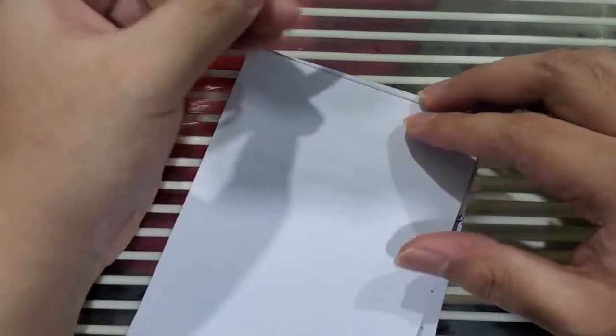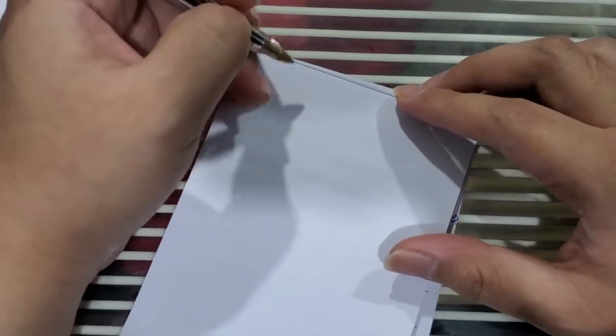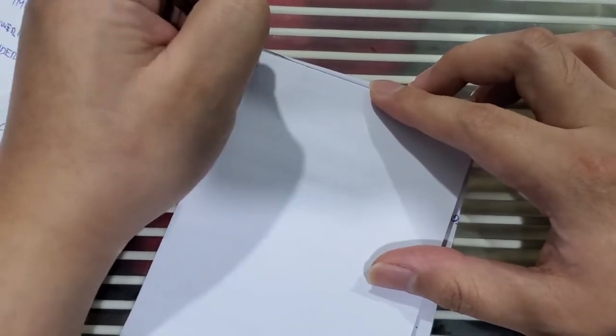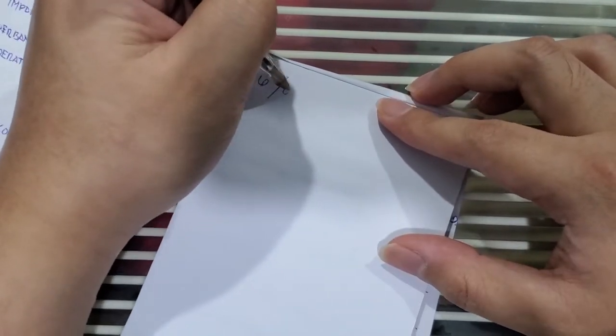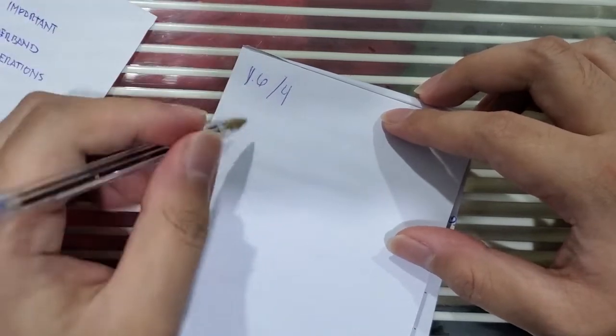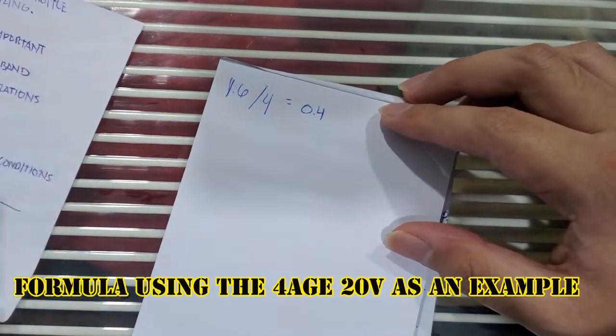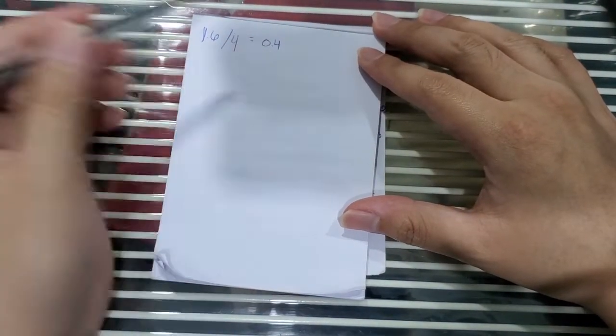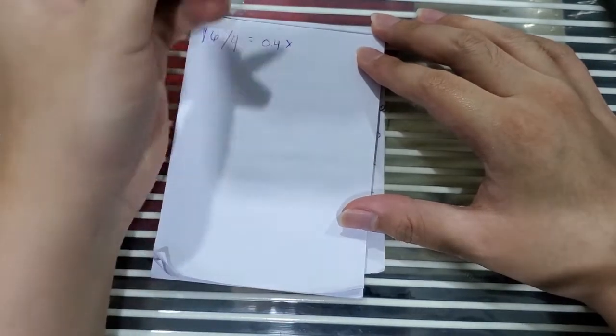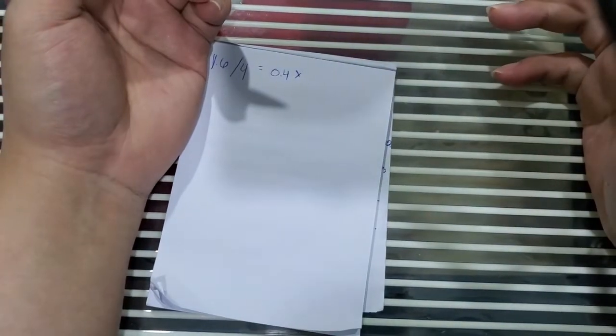The formula for choosing your throttle body size is the displacement of your engine divided by how many cylinders you have, so 1.6 divided by 4 equals 0.4.